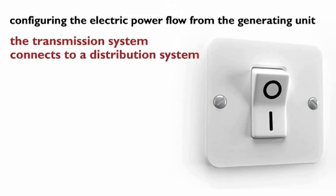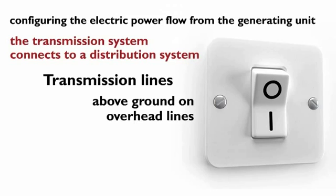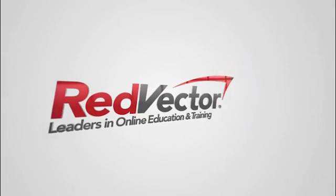From this point, the transmission system connects to a distribution system located at the distribution substation. Transmission lines are typically installed above ground on overhead lines, except in more urban-type areas that are densely populated. In urban areas, underground cable systems or bus bars are more often utilized.